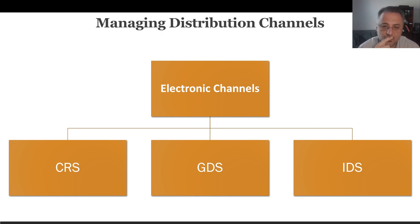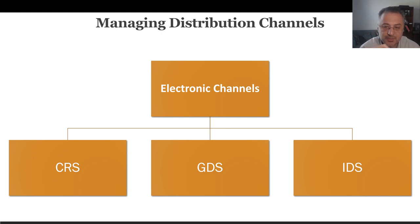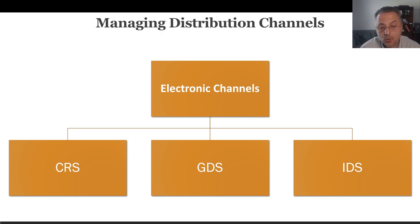It is extremely important to effectively manage electronic distribution channels, considering how much of your business is or will be coming from them. Even if you are not working for a brand right now, most likely you will be in the future, and that brand will likely have a central reservation system with some kind of agreement for your property to use it. The CRS accepts reservations for the brand you belong to — such as Marriott or Hilton — whether accessed via the brand's website or by calling the brand's phone number. Those reservations are then transferred to your property management system.